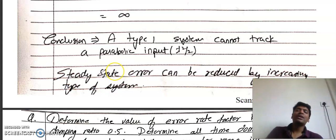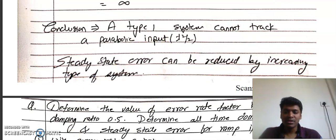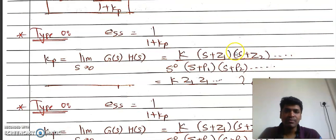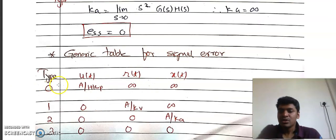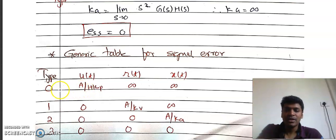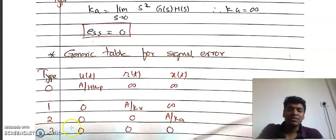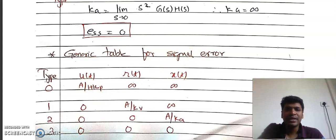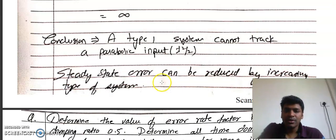We can reduce the static error by increasing the type number of the system. From the table: a Type 0 system works for unit step signal, a Type 1 system works properly for ramp signal, a Type 2 system gives constant error for parabolic signal, but Type 2 and Type 3 systems give zero error for ramp. This gives us an idea of which type of system gives constant, zero, or infinite error for a given input.